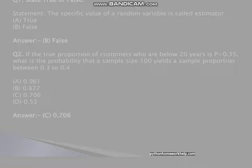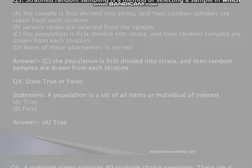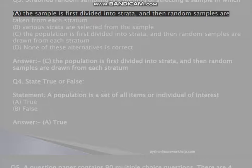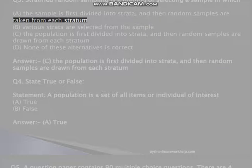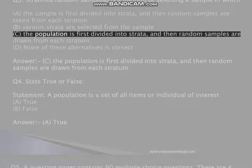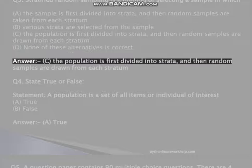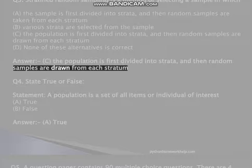Pythonhomeworkhelp.com. Q3. Stratified random sampling is a method of selecting a sample in which: A, the sample is first divided into strata, and then random samples are taken from each stratum, B, various strata are selected from the sample, C, the population is first divided into strata, and then random samples are drawn from each stratum, D, none of these alternatives is correct. Answer: C, the population is first divided into strata, and then random samples are drawn from each stratum.